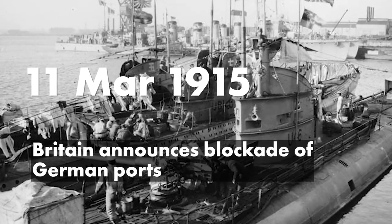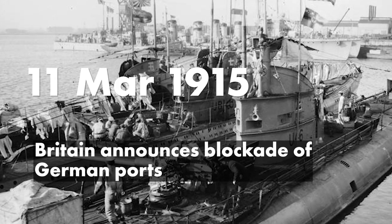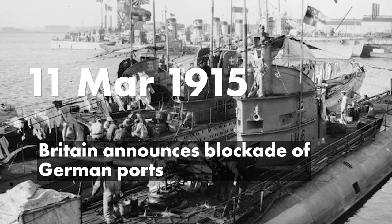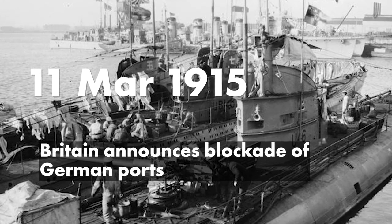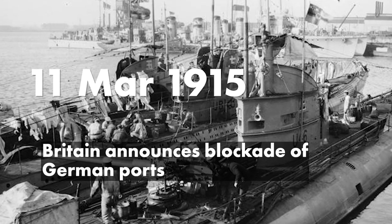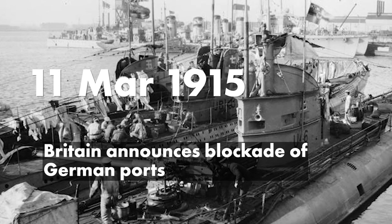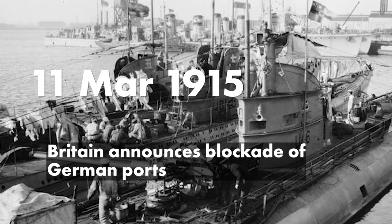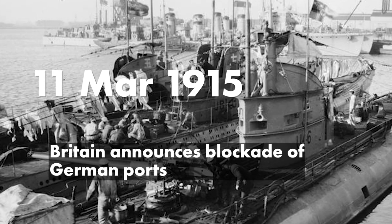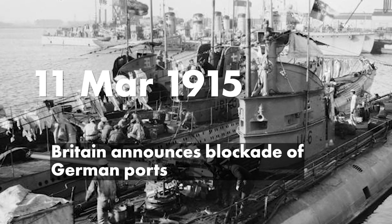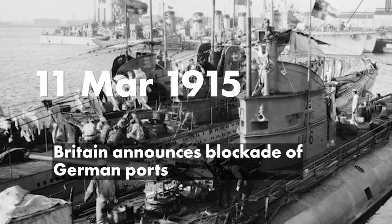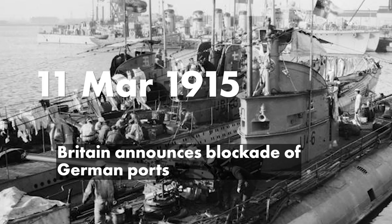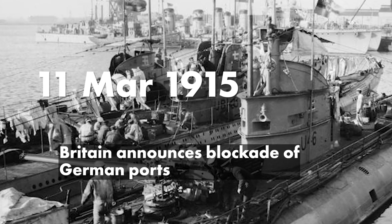On the 11th of March 1915, in an attempt to starve the enemy into submission, Britain announces a blockade of German ports — neutral ships heading for Germany are to be escorted to Allied ports and detained. The British steamship RMS Falaba becomes the first passenger ship to be sunk by a German U-boat, the U-28. 104 people are lost to the sea, including one American passenger — probably highlighted for the fact that it likely led to the involvement of America.